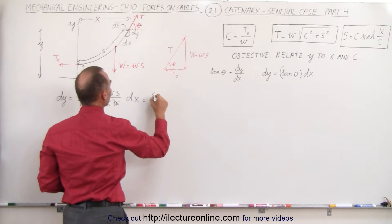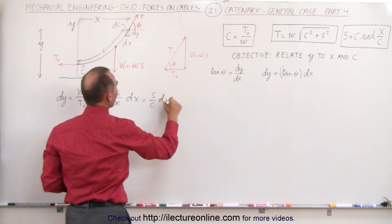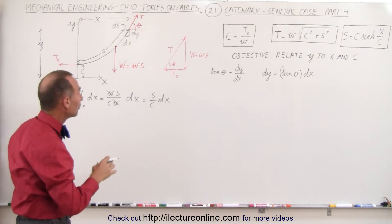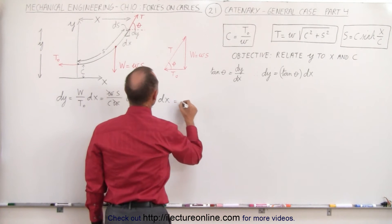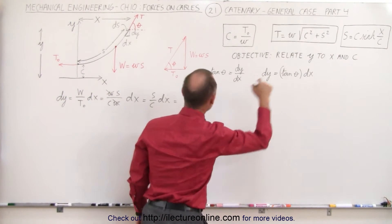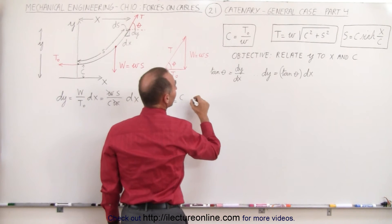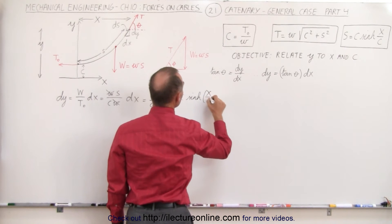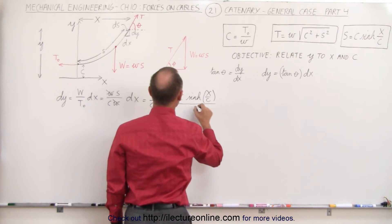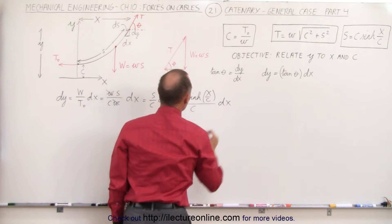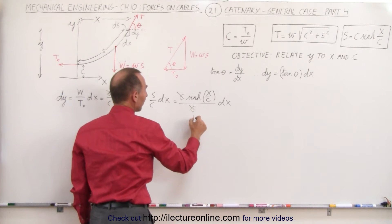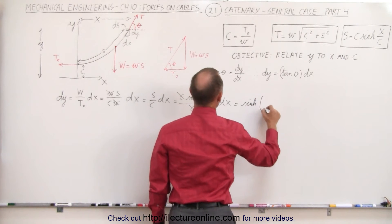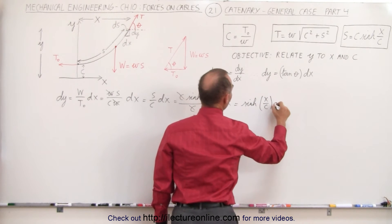This becomes equal to S over C times dx. Remember that S, from the previous video, we had an equation for that. That was equal to C times the hyperbolic sine of X over C, divided by C, times dx. Notice that the C's cancel out, and this therefore becomes equal to the hyperbolic sine of X over C times dx.